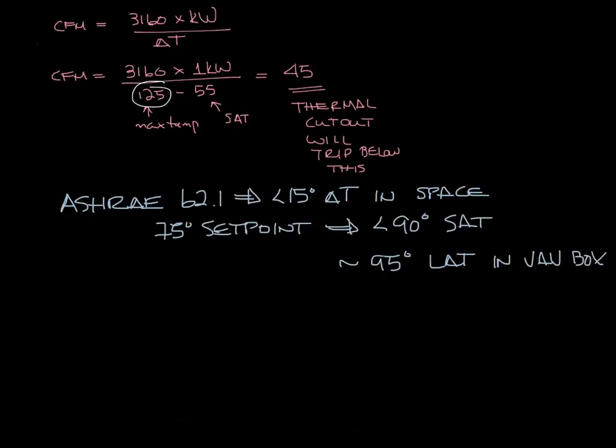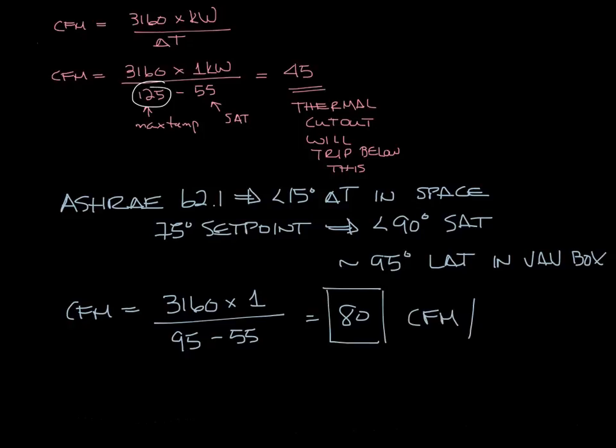Let's make that 95 degree leaving air temperature from the VAV box itself and do our CFM calculation again. CFM equals 3160 times 1KW divided by 95 minus 55, and that equals 80 CFM, or again since it's 1KW, 80 CFM per KW.